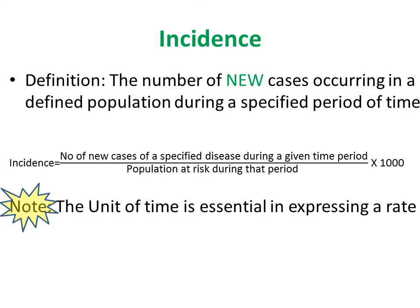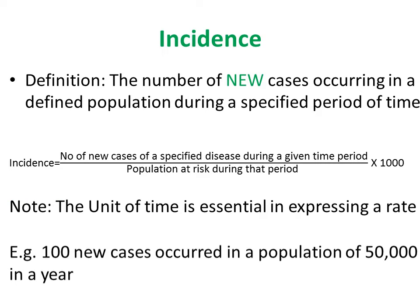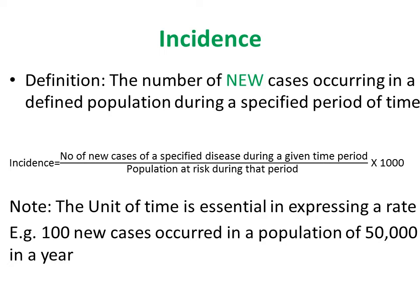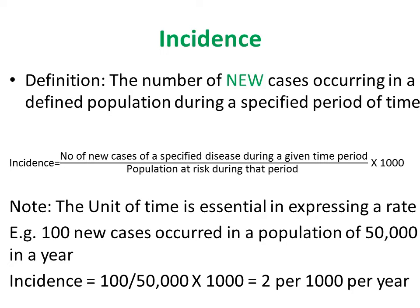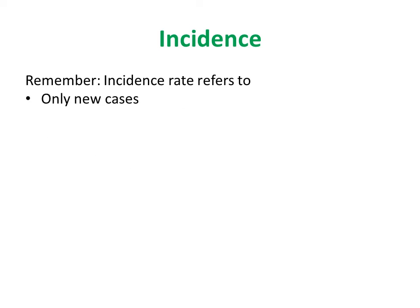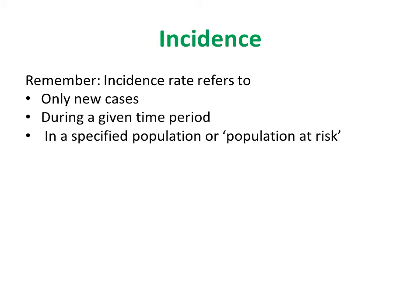The unit of time is essential in expressing a rate. For example, 100 new cases occurred in a population of 50,000 in one year, giving an incidence of 2 per 1,000 population per year. Remember that incidence refers only to new cases occurring during the given time period in the specified population, or the population at risk.